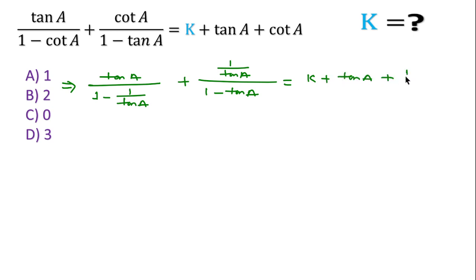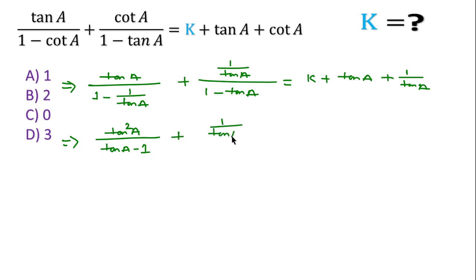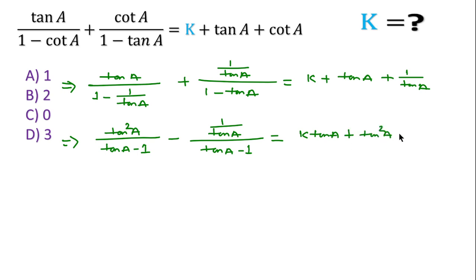So cot a becomes 1 over tan a, and 1 minus tan a equals k plus tan a plus 1 over tan a. We can write this equation as tan squared a, then tan a minus 1, and I will write 1 minus tan a as tan a minus 1 so that the plus sign changes into minus.